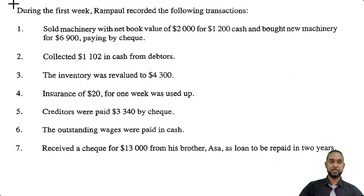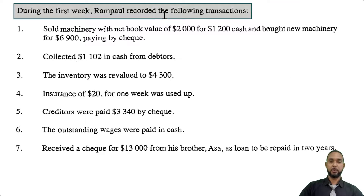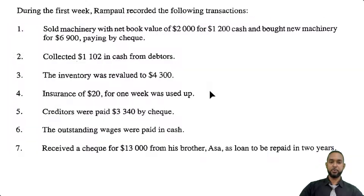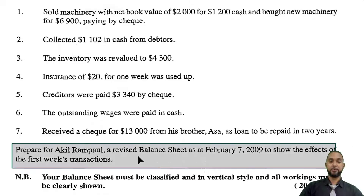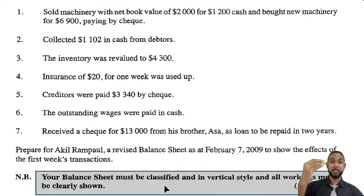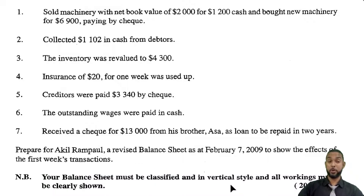We have some other items here. It says during the first week, Rampal recorded the following transactions. So we have seven transactions here. Now before we go through each one, let's see what they want us to do. It says prepare for Akhil Rampal a revised balance sheet as at January 7th, 2009, to show the effects of the first week's transactions. The balance sheet must be classified with sections for non-current assets, current assets, etc., in vertical style, and all working must be clearly shown. Full 20 marks. So we're going to go through and do working for certain items and then we're going to draw up the balance sheet.